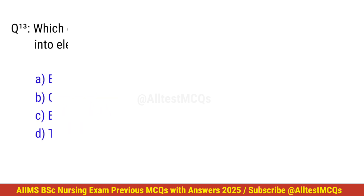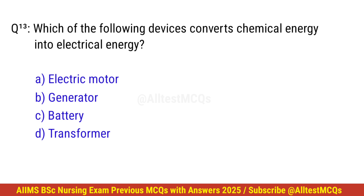Question number 13. Which of the following devices converts chemical energy into electrical energy? Correct option is C. Battery.